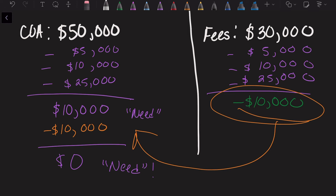Let's say housing is $8,000 — so your new total fee becomes $38,000. Your new surplus will be $2,000, which they apply to your account, and you'll still have an unmet need of $8,000.